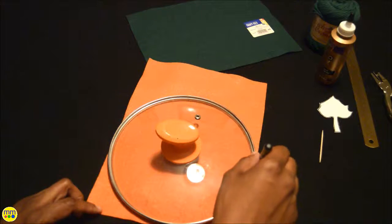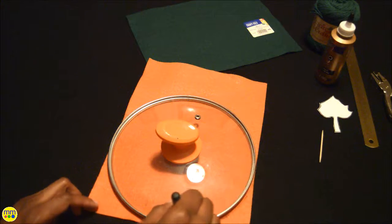Start by tracing out a circle on your orange felt and cut it out. Cut out two leaves from your green felt.